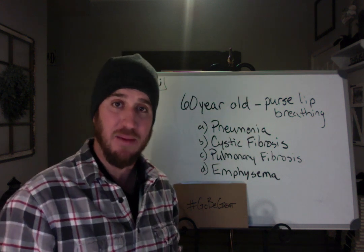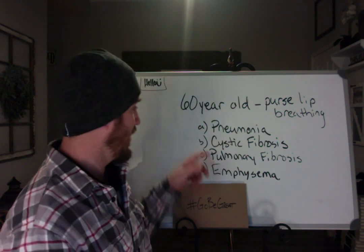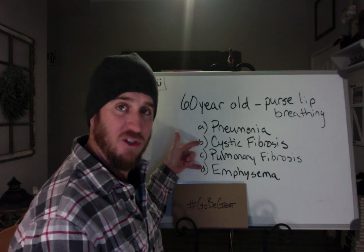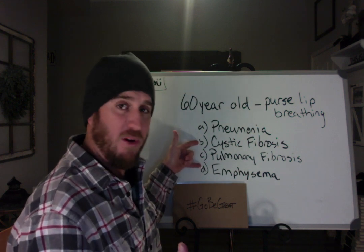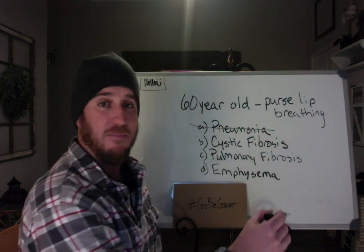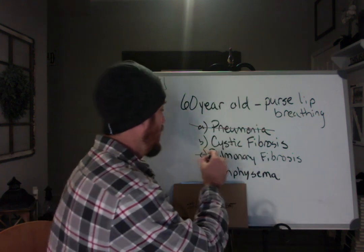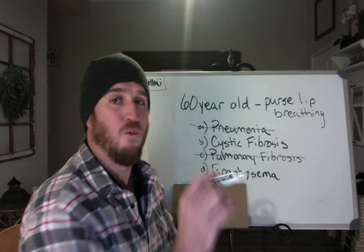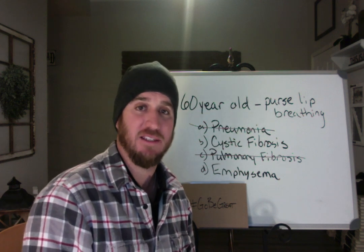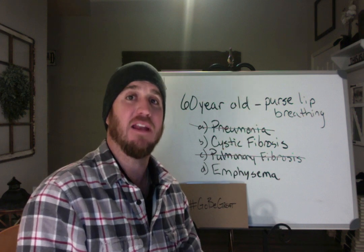Well, if we know our C-BABEs, which are our obstructive lung diseases, we know that cystic fibrosis and emphysema are the only two probable answers here. We can mark out pneumonia — why? Because it's a restrictive lung disease. We can mark out pulmonary fibrosis — why? Because it's a restrictive pulmonary disease. Which leaves us with cystic fibrosis and emphysema.